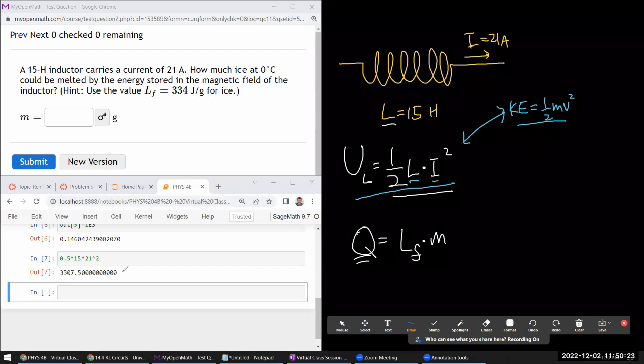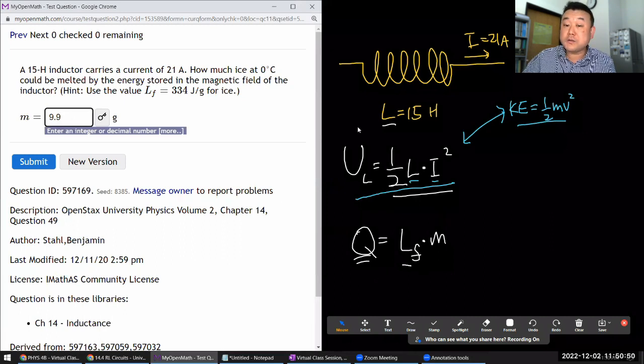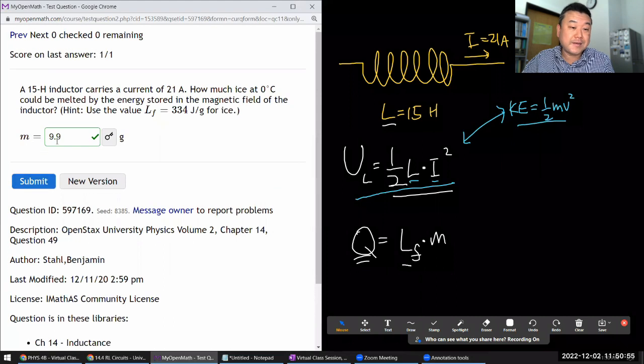So we already have Q, that's that number there. So if we just divide by latent heat of fusion, then we'll get mass in the units of gram. So we are going to take the energy, divided by latent heat of fusion, 334. And that's how much ice will melt, 9.9 grams. Wow, that's small. The circuit parameters here are fairly large, but the amount of ice it'll melt is kind of tiny, which I don't know, is surprising to me.